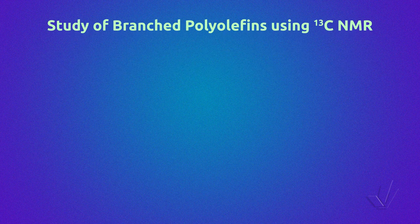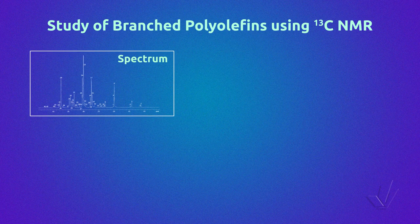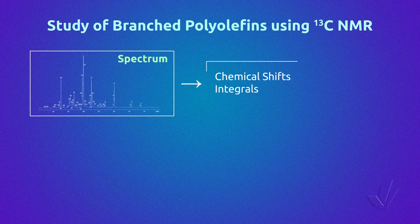In a decoupled carbon-13 NMR, each type of carbon gives a peak with a determined chemical shift in ppm. In a quantitative NMR, each peak integral gives information about the number of carbons of that type in the sample. So those are the main parameters that can be extracted from a spectrum: the chemical shift and the integrals.